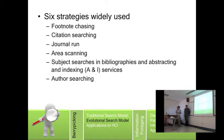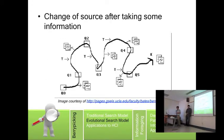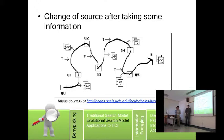The final technique is author searching. For example, when searching for berry picking, I will look at the author's name and then see what other articles she wrote about berry picking. The diagram here shows the evolving search of berry picking — how a user changes the sources, the content, and queries as he finds new information. This loop continues until he finds all the answers.